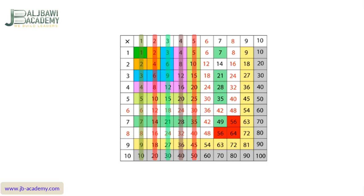Now I skip 6, 7, and 8 and go to 9 and 10. What about 10? It is very easy — 0 is the hero. If you multiply any number by 10, you just add 0 to that number. 5 times 10: you take 5 and add 0, it becomes 50. By remembering '0 is the hero,' you know 6 times 10 equals 60, 7 times 10 equals 70. You just add 0 to the number you multiply by 10. So the multiplication table of 10 is very easy.